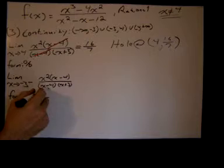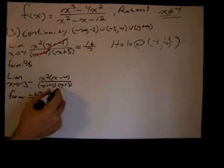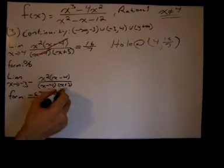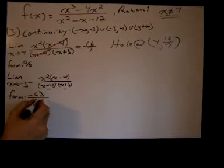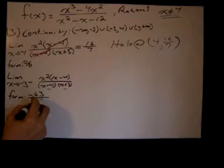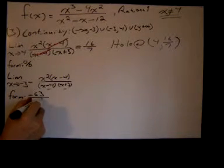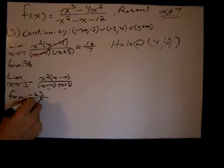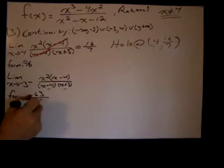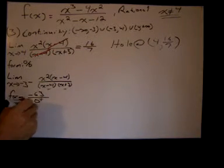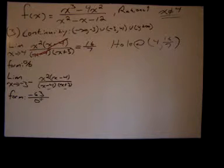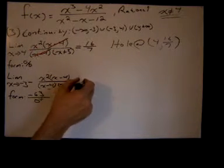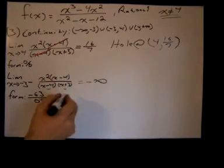When x is to the left of negative 3, negative 3 minus 4 is a negative number. When x is to the left of negative 3, x plus 3 is a negative number. A negative times a negative is a positive. So we like to write that little positive symbol there. So I have the form negative 63 over 0 positive, which implies that the limit is negative infinity.